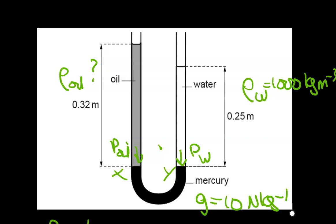You would have your base which is mercury, and then on either side, either limb of your U-tube, you have oil and then you have water. Clearly these substances are at different densities.